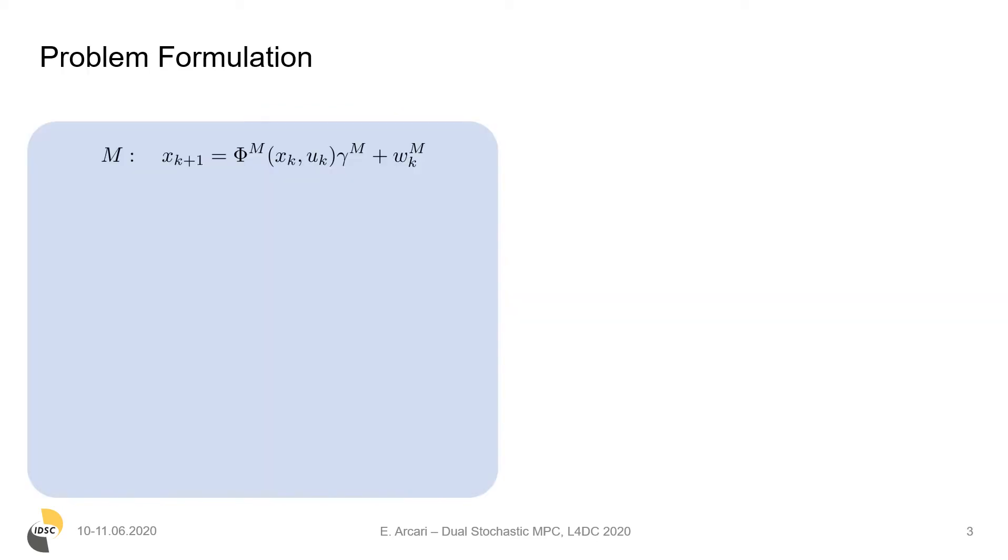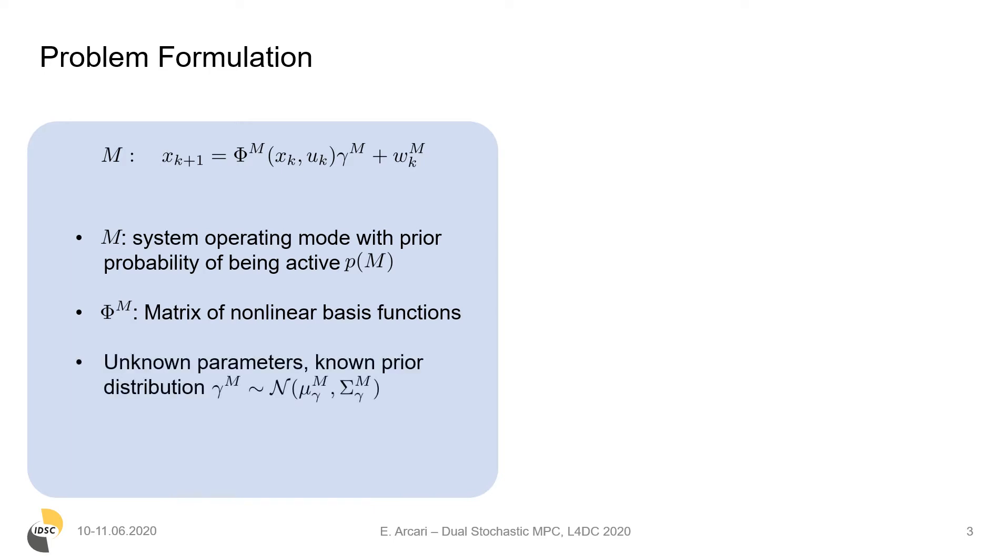We consider non-linear dynamical systems where M represents the operating mode, phi is a matrix of non-linear basis functions with associated unknown parameters gamma, for which we assume to know a prior distribution, and the system is subject to additive disturbances W.